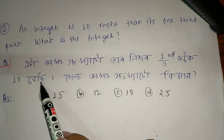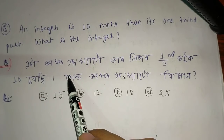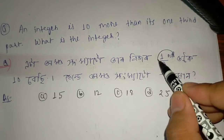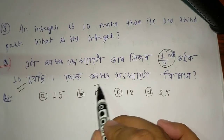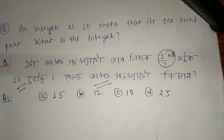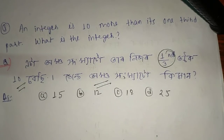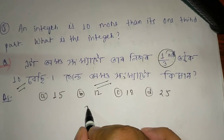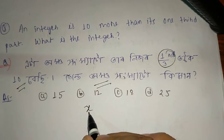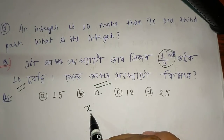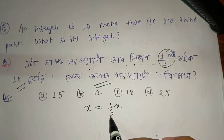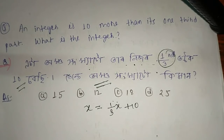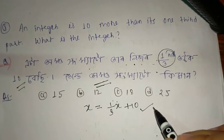What is the integer? The integer is 10 more than its one-third part. So the integer's one-third part — tarn nizor 1 by 3rd — is 2 more. So we form the equation: x's 1 by 3rd is 2 more — x + x/3 gives us the equation.